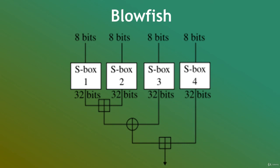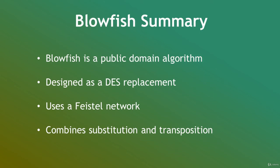Blowfish has a 64-bit block size and a key length of anywhere from 32 bits to 448 bits. It is a 16-round Feistel cipher and uses large key-dependent S-boxes, similar in structure to CAST-128 which uses fixed S-boxes. This diagram shows Blowfish's F-function. The function splits the 32-bit input into four 8-bit quarters and uses the quarters as input to the S-boxes. The outputs are added modulo 2^32 and XOR'd to produce the final 32-bit output. Blowfish is one of the fastest block ciphers except when changing keys, as each new key requires pre-processing equivalent to encrypting about 4 kilobytes of text.